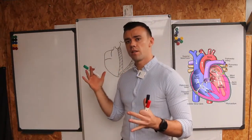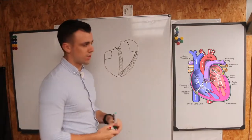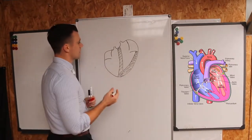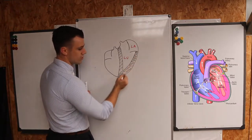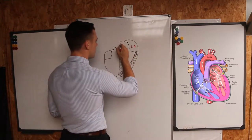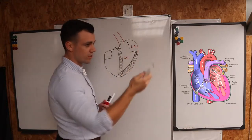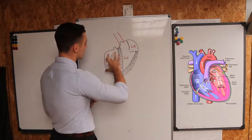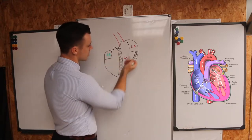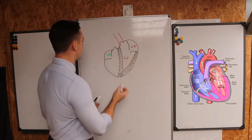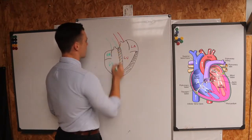Let's orient ourselves on this basic illustration of the heart. What we've got here are the chambers of the heart. This is the left side of the heart — the left atrium and the left ventricle, which is the most muscular portion because it sends blood out to the rest of the body via the aorta. On the other side we've got the deoxygenated side: the right atrium, then the tricuspid valve between the right atrium and right ventricle — and the mitral valve between the left atrium and left ventricle — and then out of here we've got the pulmonary artery going to the lungs.